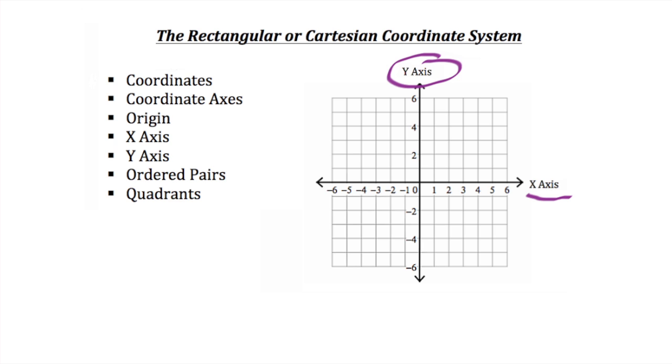The x-axis and y-axis divide the plane into four regions called quadrants. They are denoted as quadrant 1, quadrant 2, quadrant 3, and quadrant 4.